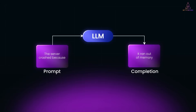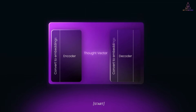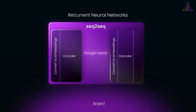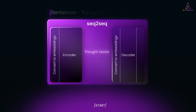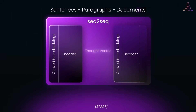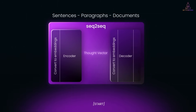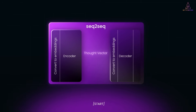Before ChatGPT and all the buzz, language models were already around for decades. But the real shift came in 2014 when Google introduced the sequence-to-sequence architecture. Sequence-to-sequence models are based on RNNs — recurrent neural networks. Basically, these models processed one token at a time and updated an internal memory after each step. That made them good for handling sequences like sentences, paragraphs, and even full documents. They were used for tasks like translation, classification, and summarization. But they had one big limitation: the information bottleneck.